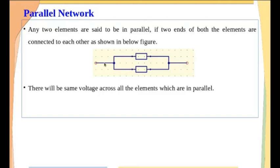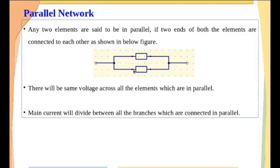There will be same voltage. Important thing, dear students — in case of a series network, there will be same current. Whereas in case of a parallel network, there will be same voltage across all the elements which are in parallel. The current will divide in a parallel network, whereas across the elements there will be same voltage. The main current will divide among all the branches which are connected in parallel.